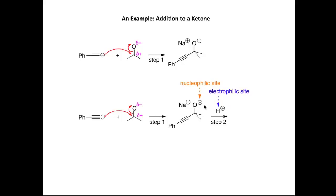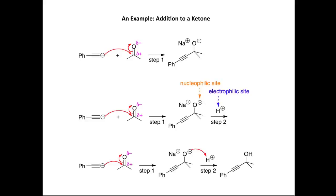In the second step, the negatively charged oxygen is the nucleophilic site and reacts with a proton, which is the electrophilic site. One further curly arrow shows electron density moving from the minus toward the plus, making a new O-H bond in the alcohol. Overall, we've performed a nucleophilic addition to a ketone.